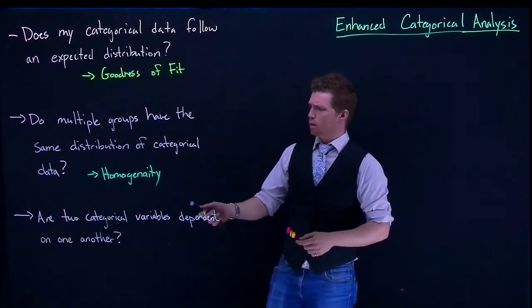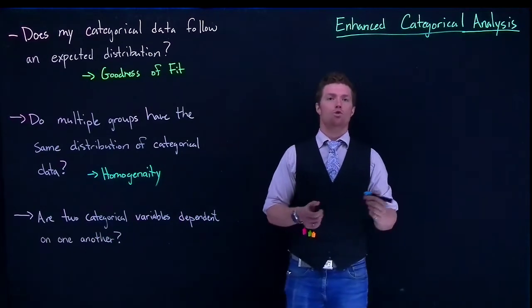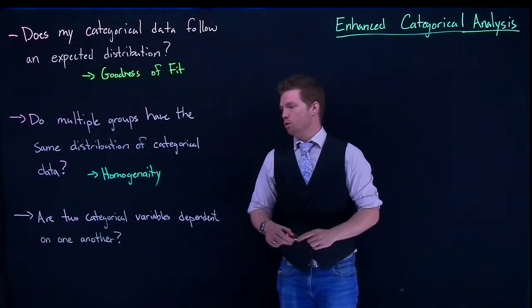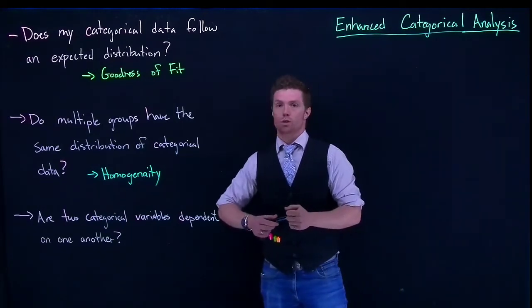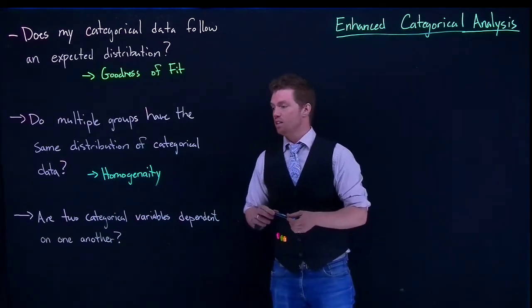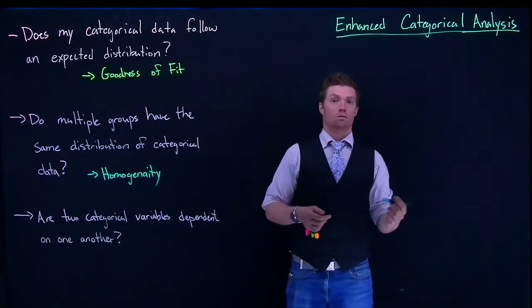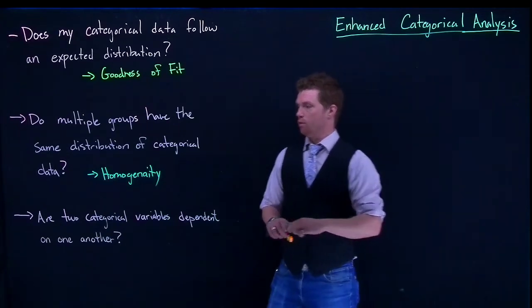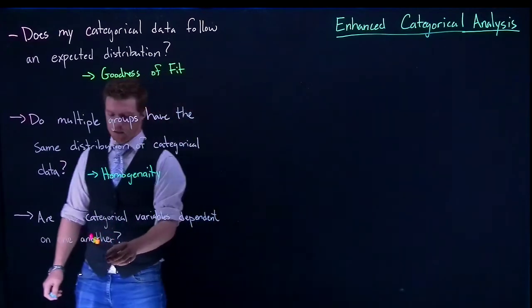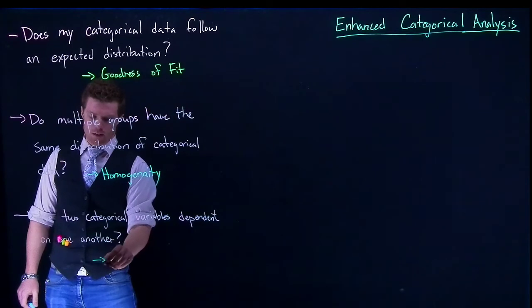Now, this last one: what happens if we were to look at two pieces of categorical data? Maybe in Chicago, we're looking at ethnicities and occupations. We want to see, are they independent from one another or dependent on one another? This is called a test of independence.